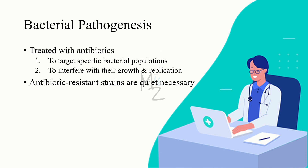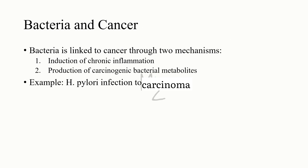Bacterial pathogenesis is treated with antibiotics, which work in two ways: by targeting specific bacterial populations, and by interfering with bacterial growth and replication. Antibiotic-resistant strains are an important consideration because some antibiotics will not work against those strains, and effective antibiotics must be selected accordingly.